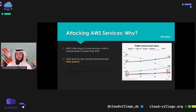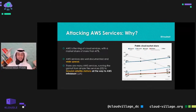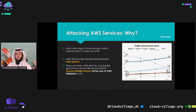AWS services are documented and widespread. They run the gamut from simple stuff like S3 buckets to ground satellite stations. So many services exist in AWS — you need to be really aware of how big your attack surface is when running an AWS cloud infrastructure.